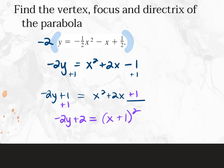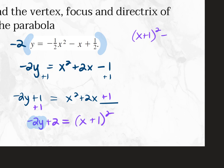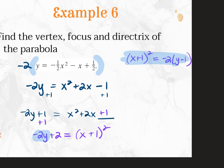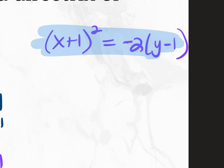You have to take the negative 2 off — there can be nothing attached to the Y term. Switch sides so the squared term is on the left: (X plus 1) squared equals negative 2(Y minus 1). Now it's in standard form. It faces down because it's a negative 4P and it's an X squared. The 4P equals negative 2, so the absolute value of P equals one-half.